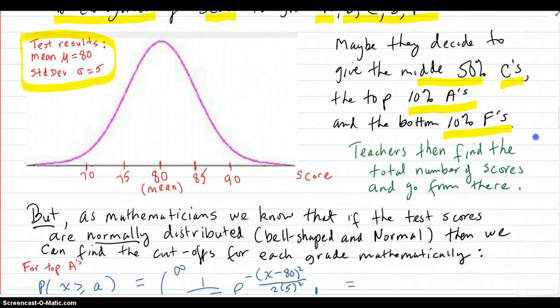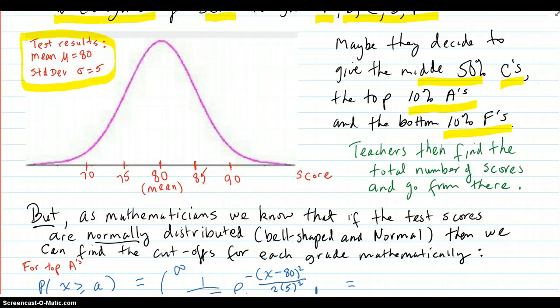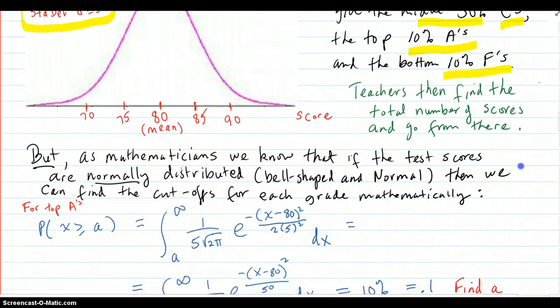Okay. So, normally what the teacher would do is they would just take the total number of scores and count around the average from there and figure out what the 50% was. But, since we have High Powered Calculus 2, we're going to do it a better way, a different way.